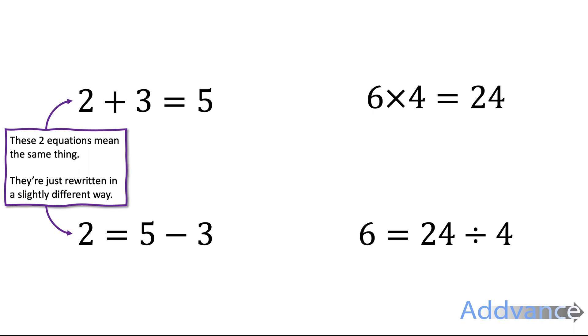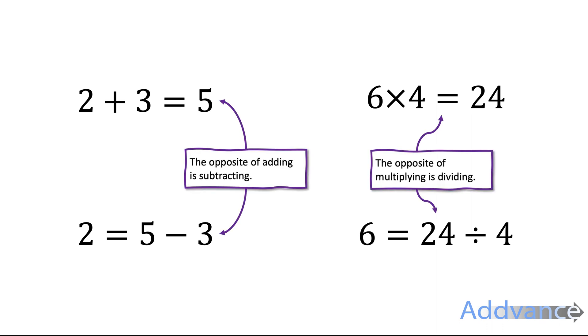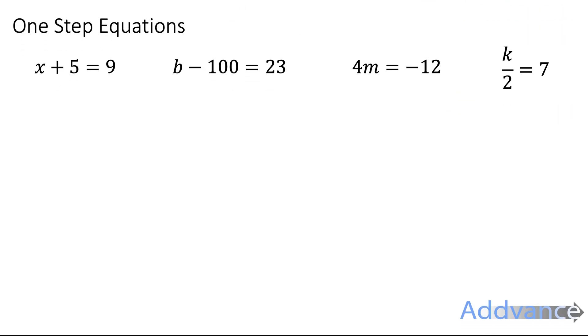So these two equations mean the exact same thing, they're just rewritten in a slightly different way. And the reason for that is because the opposite of adding is subtracting and the opposite of multiplying is dividing. This is a really important idea and we're going to use it to solve one step equations here.